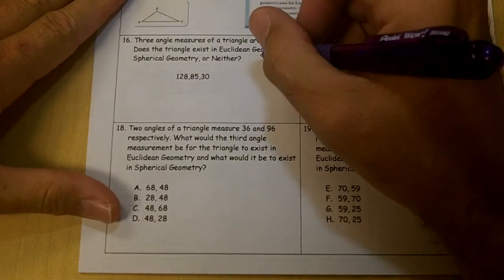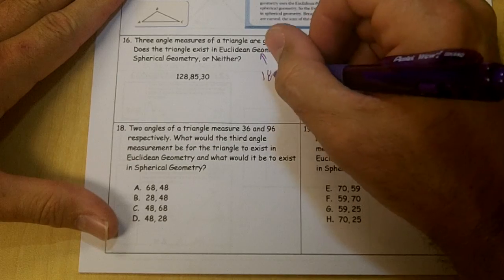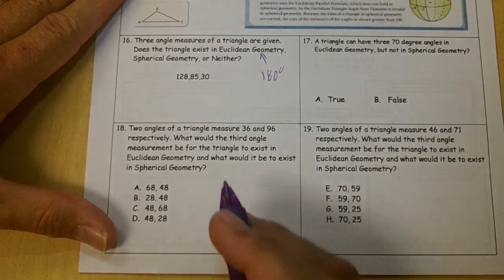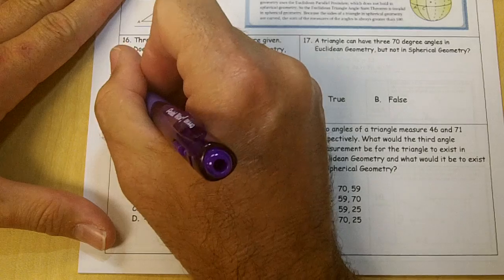Spherical and Euclidean geometry. Euclidean geometry always adds up to 180. Spherical is going to be greater than 180.